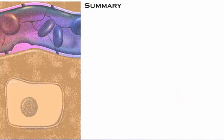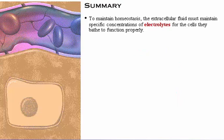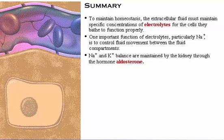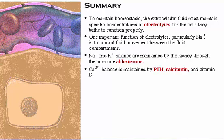Here's a summary of what we've covered. To maintain homeostasis, the extracellular fluid must maintain specific concentrations of electrolytes for the cells they bathe to function properly. One important function of electrolytes, particularly sodium, is to control fluid movement between the fluid compartments. Sodium and potassium balance are maintained by the kidney through the hormone aldosterone. Calcium balance is maintained by parathyroid hormone, calcitonin, and vitamin D.